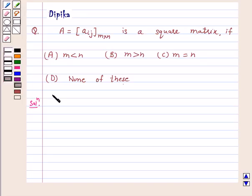Thus, an m by n matrix is a square matrix if m equals n. So for a square matrix, m must equal n.